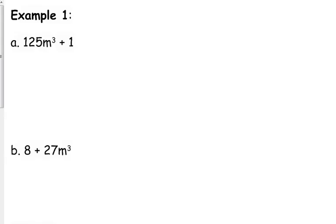We're just going to go through some examples, but you can reference those as needed. As always, the first thing you should always look for when it says factor is you should look for a GCF. So with this first example, 125m cubed plus 1, there's no GCF.